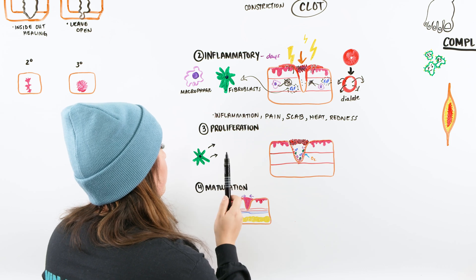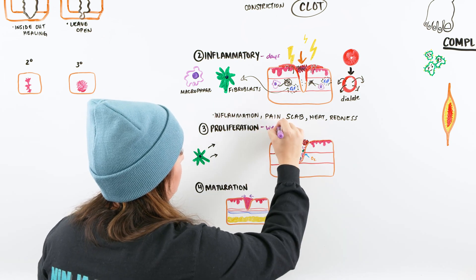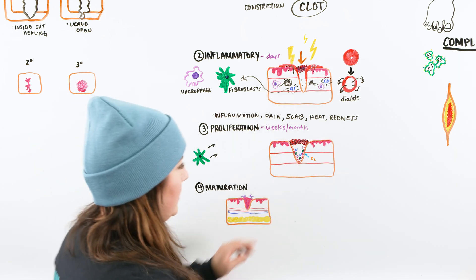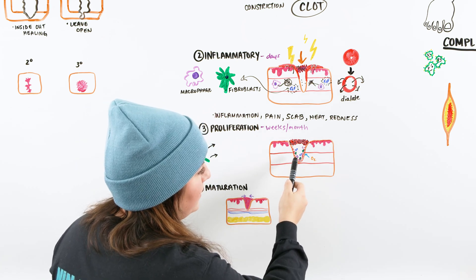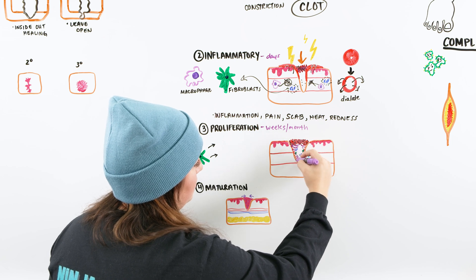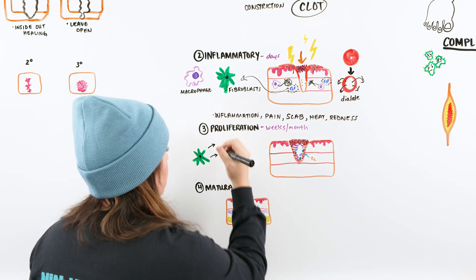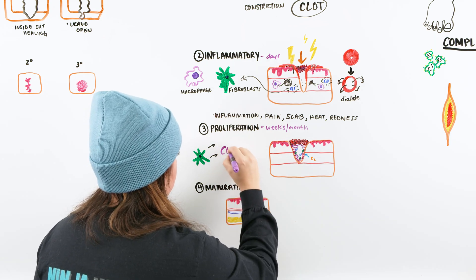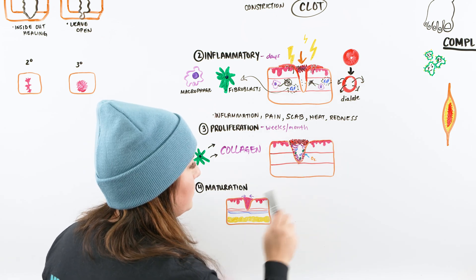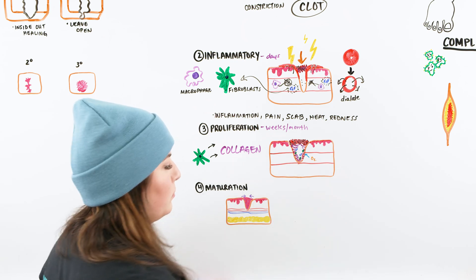We go into the proliferation stage — now we have a nice scab formed. This phase can take anywhere from weeks to months, depending on the injury, depth, and the patient's ability to heal. The fibroblasts come and they drop off collagen. Collagen is important because it allows us to start generating granulated tissue in the wound and also helps close it up. Oxygen also plays an important role here — we need oxygenation to this area for new cell growth.